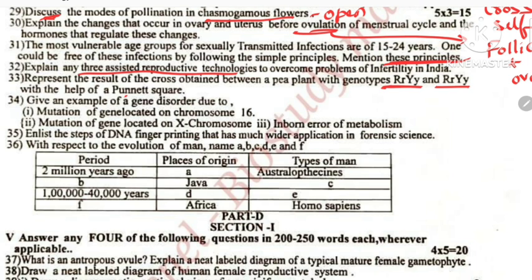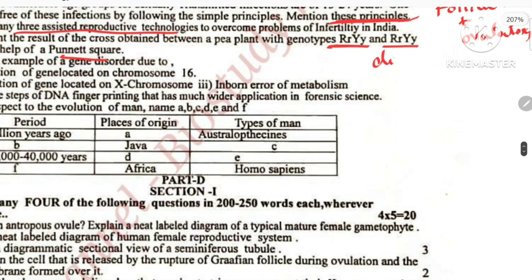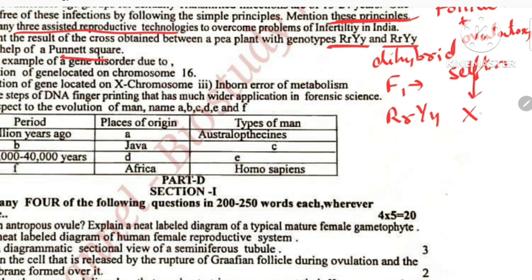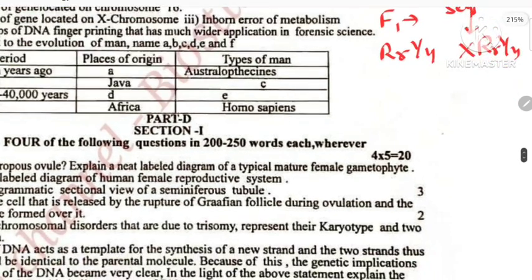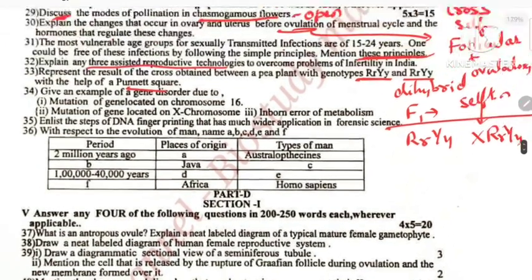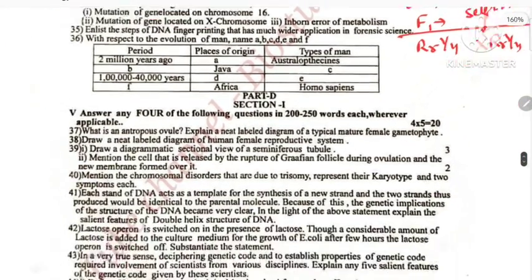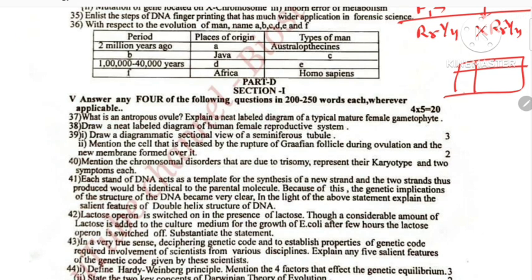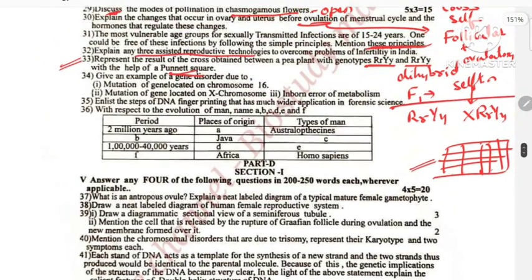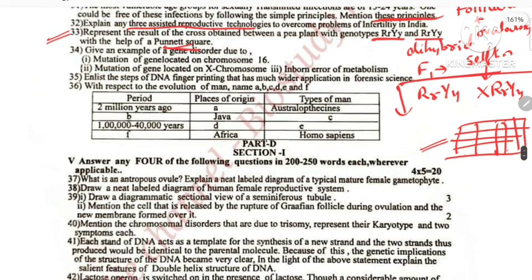This is very simple — dihybrid cross. F1 is selfing, so this gives the same genotypes. Inborn error of metabolism is phenylketonuria.